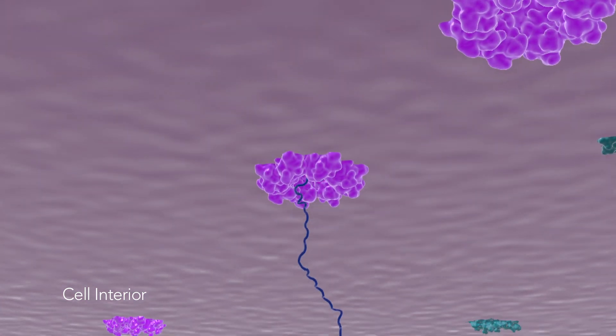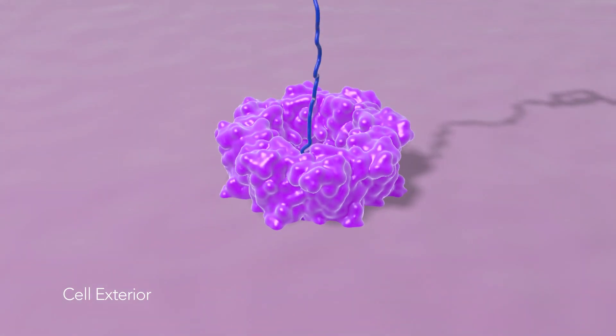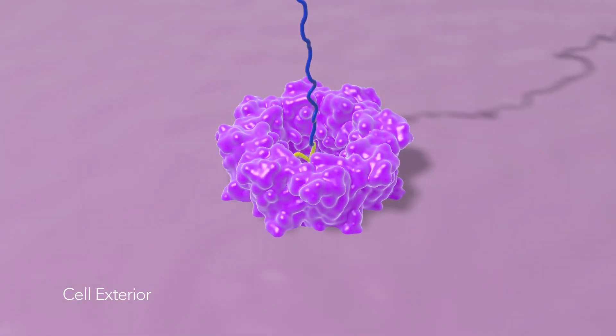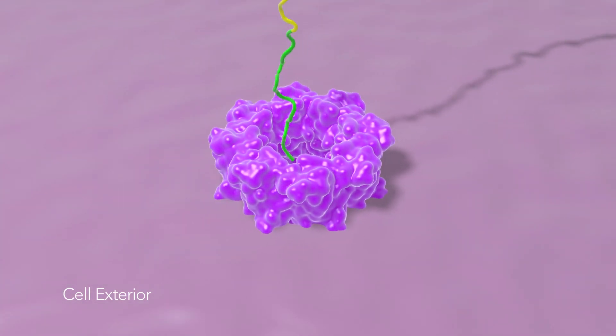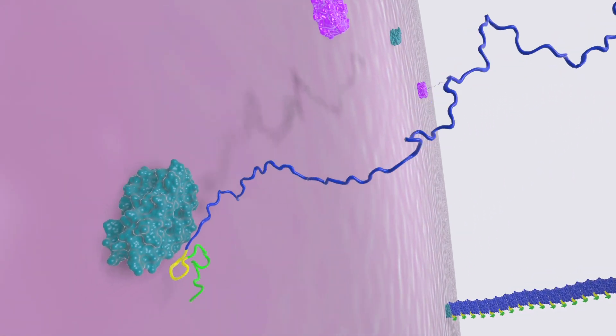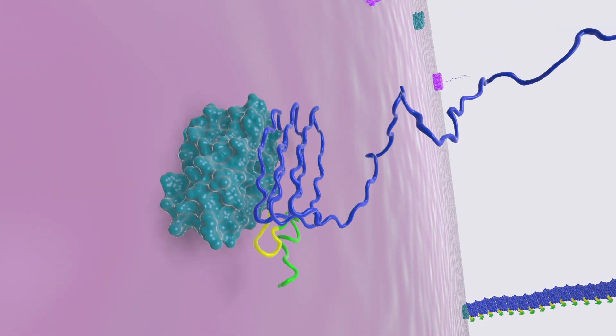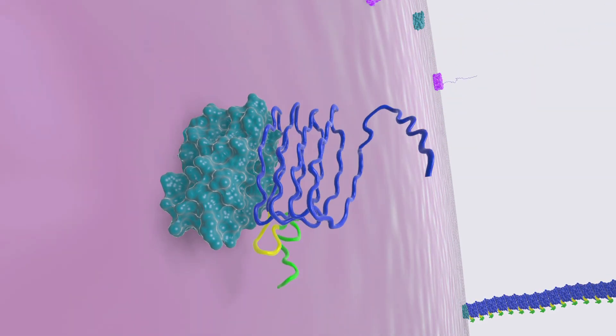The cells produce this protein within themselves and then secrete it through various biosynthetic machinery components into the extracellular space. It then is nucleated at the cell surface to form something called amyloid fibers, which are essentially these self-assembled protein structures that form fibrils.